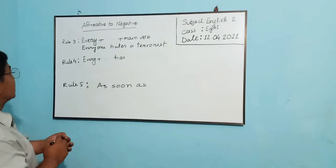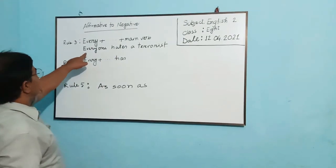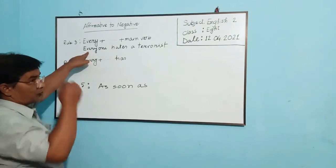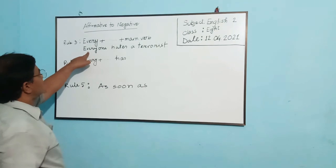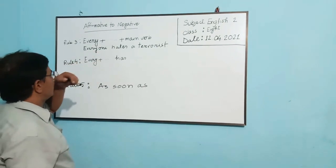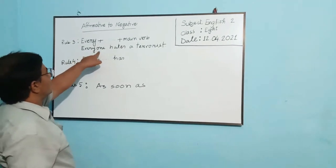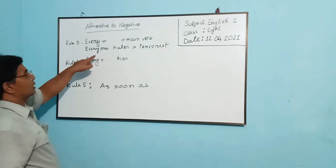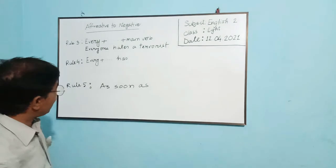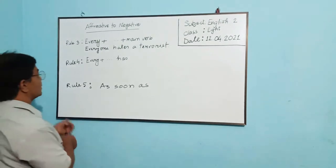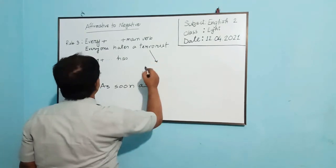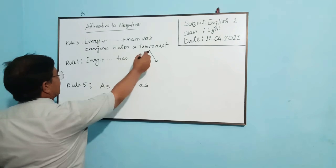Okay, this sentence is an example of every. If you find in a sentence every, and after every it may be one or any other noun—every mother, every father, every brother—and you can also find everyone, everybody, then you will have to transform this sentence like this. I am giving here the answer: Everyone is a terrorist.